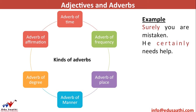Next is the adverb of affirmation, which tells you about the certainty of an action. For example, 'Surely you are mistaken' — 'surely' qualifies 'being mistaken,' affirming certainty, so it becomes an adverb. 'He certainly needs help' — 'certainly' affirms the need for help and qualifies the verb, so it also becomes an adverb.